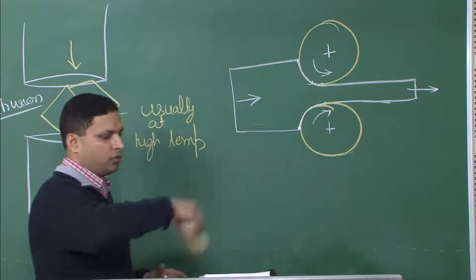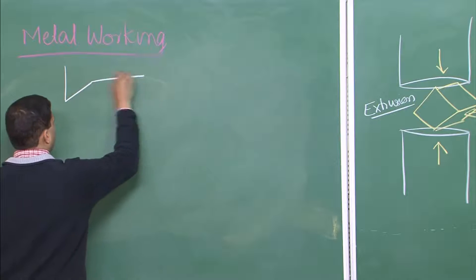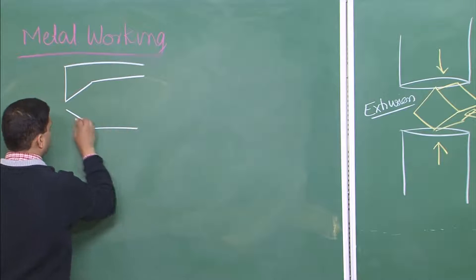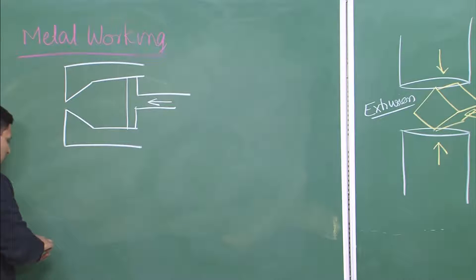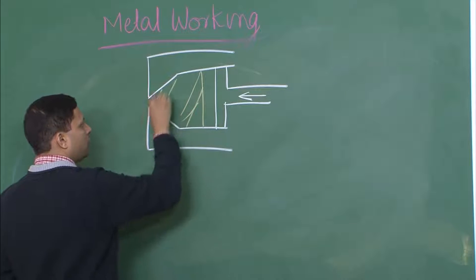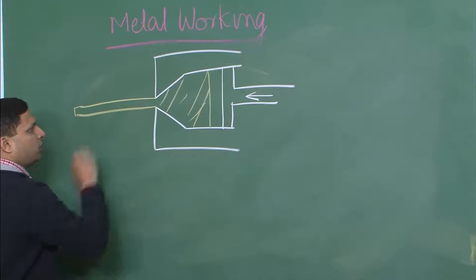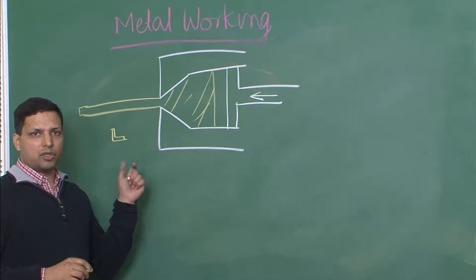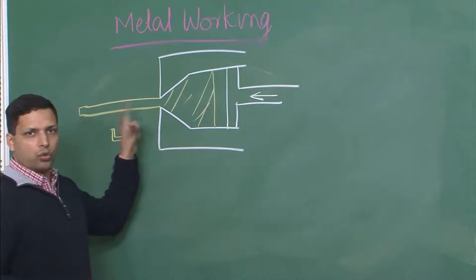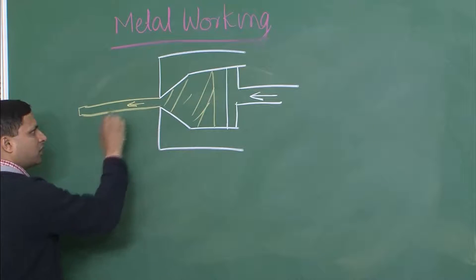Let us look at another example: extrusion. Extrusion can be direct or indirect. In direct extrusion, you have a die, and inside you have a piston which moves forward, forcing the metal through an orifice to produce a longitudinal structure. This longitudinal structure can be of any cross section — for example, an L-section. Those aluminum L-shaped frames you have seen are manufactured this way by extrusion.